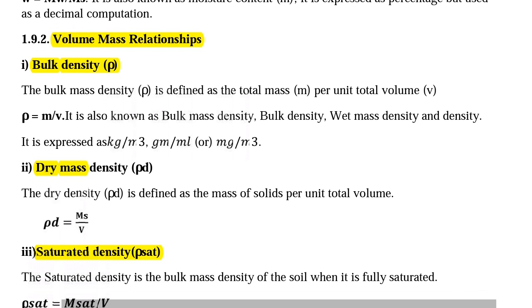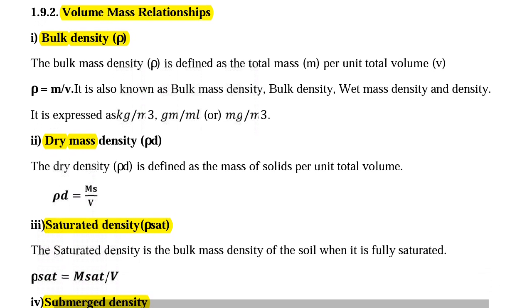Next we are going to see volume-mass relationships. First we will see bulk density rho. Bulk mass density rho is defined as total mass per unit total volume. The formula for bulk density is rho equal to M divided by V. It is expressed in terms of kilogram per meter cube or milligram per meter cube.